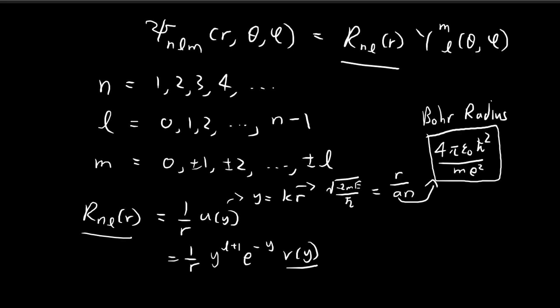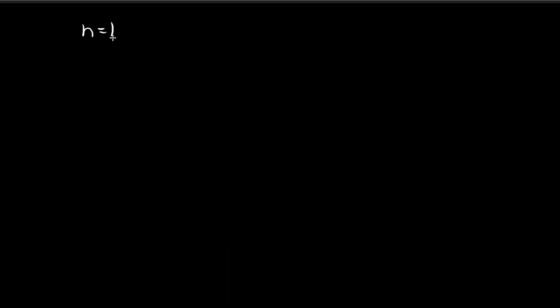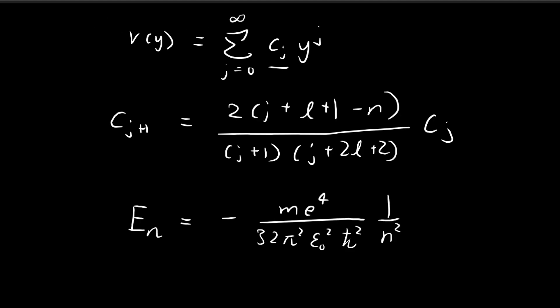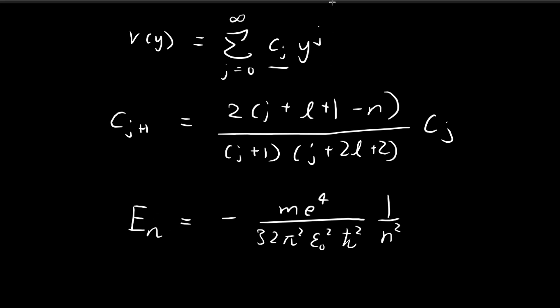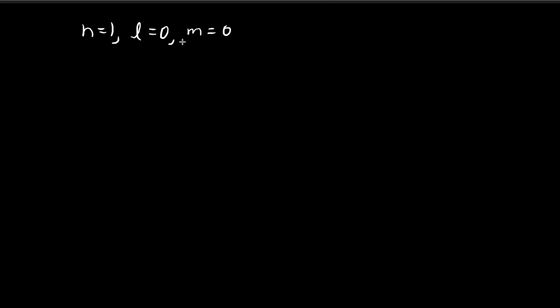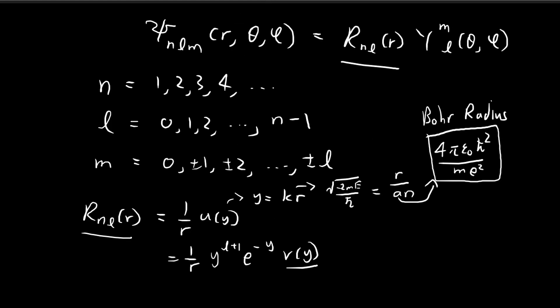We're going to deal with the ground state of the electron — the case where n = 1, l = 0, and m = 0. When n = 1, this corresponds to the lowest energy level; for larger values of n the energy level increases, remembering there's a negative sign. When n = 1, the only allowed values for l and m are 0.